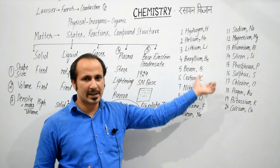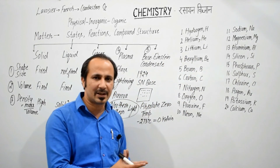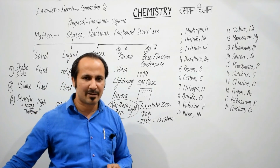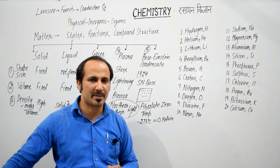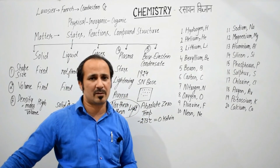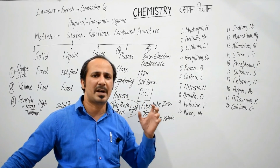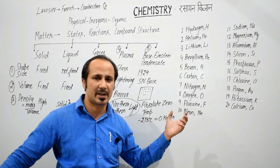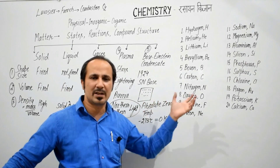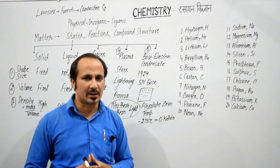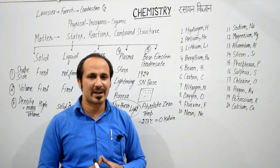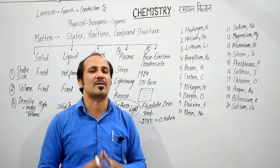ये 20 तक आपको atomic number याद रखने हैं, इनके symbols याद रखने हैं. Next classes में हम atomic mass के बारे में भी बात करेंगे और chemistry के basic rules के बारे में भी. And again I promise students कि chemistry को हम बड़े ही enjoyable तरीके से याद करेंगे — रटना नहीं है, समझ के करना है. Hope you would like this video. Thank you very much. Stay safe, stay at home.